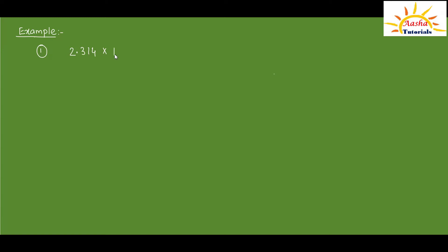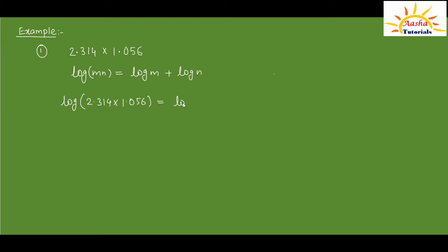Let us take the first example. Suppose we have to find the product of 2.314 multiplied by 1.056. We can use a log table. When there is a product of two numbers and we take the log of that, we just need to add the logs of those numbers — this is the product rule. So log of 2.314 × 1.056 equals log of 2.314 plus log of 1.056.